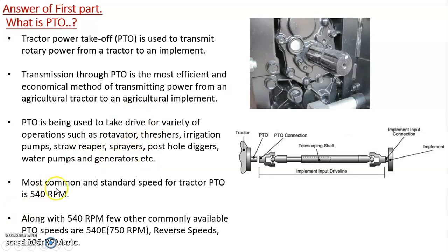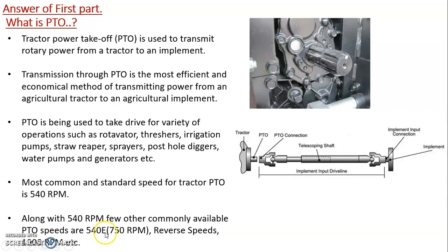The most common and standard speed for a tractor PTO is 540 RPM — that is the rotational speed of this shaft, and it is a global standard used in all countries. If a tractor manufacturer provides a PTO, 540 RPM will definitely be there. A few other commonly available PTO speeds are: 540E, where 'E' stands for economical, meaning least fuel consumption (at which the shaft rotates at around 750 RPM); reverse PTO speeds in some cases; and 1000 RPM, which is available in some foreign countries.